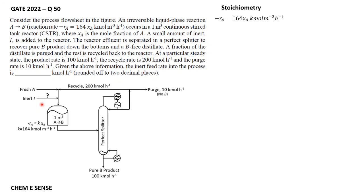The rate of reaction is: minus rA equals K times xA. Here, minus rA is the rate of disappearance of A and rate of formation of B, since 1 mole of A is converted to 1 mole of B. So minus rA equals 164 times xA kmol per m³ per hour.